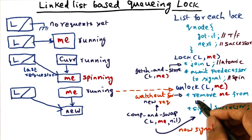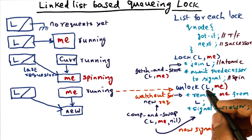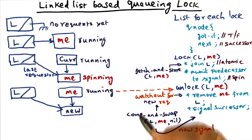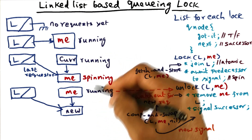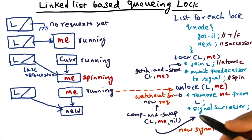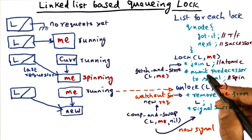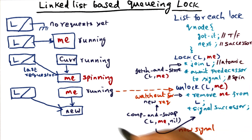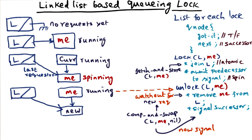That's good because you're not causing contention on the network when the lock is released. When one thread releases the lock, others who are waiting don't get bothered by the signal. And exactly one processor gets signaled when the lock is released — that's also good.